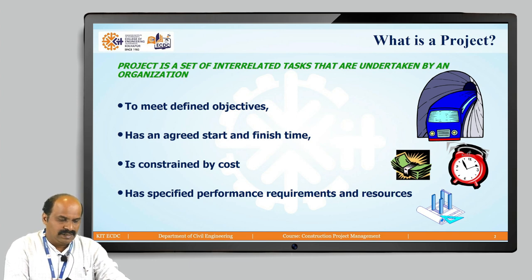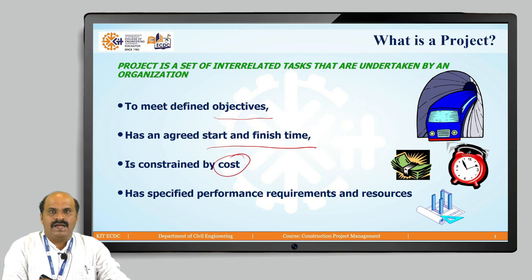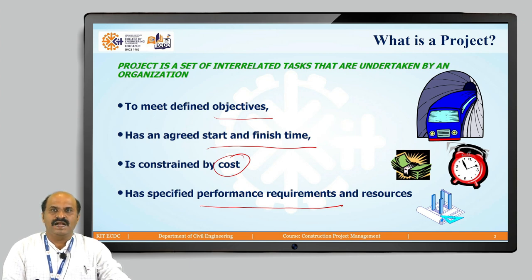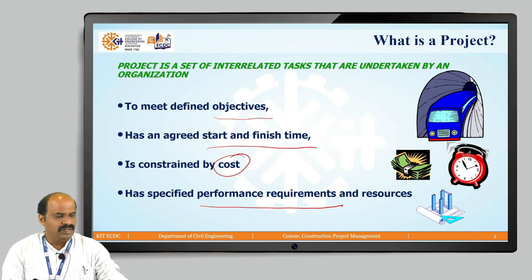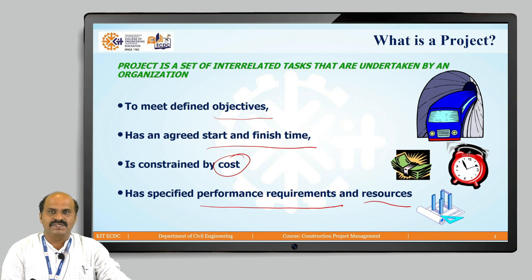The four characteristics visible in this slide — objectives, start and finish time, cost, and performance requirements — are the four criteria that separate a process from a project. A project has to have some objective, a start and finish time, a cost constraint, and performance requirements totally related to the quality of output expected. You may also have specified resources deployed for that particular project. These four or five things decide what constitutes a project and separate it from a process.